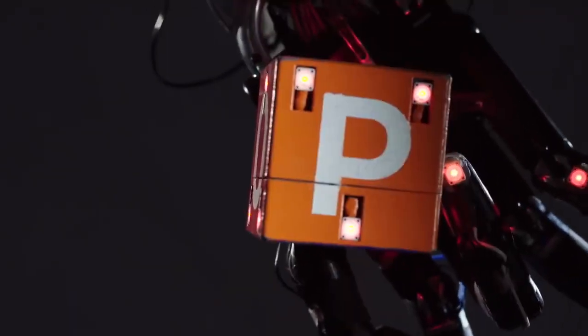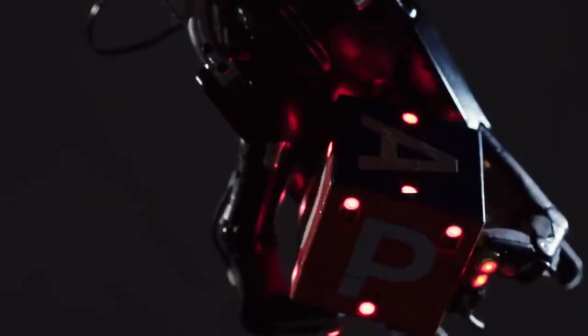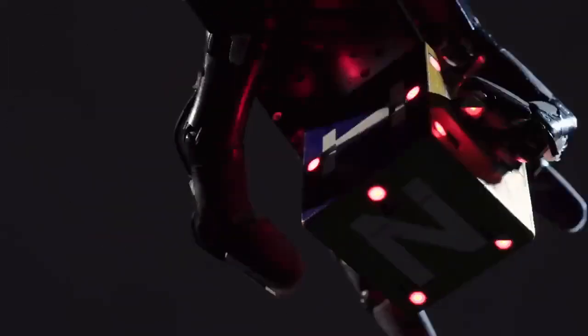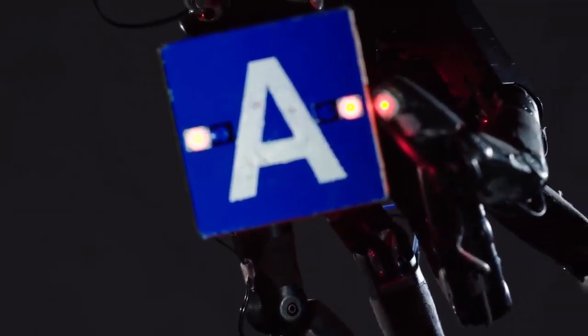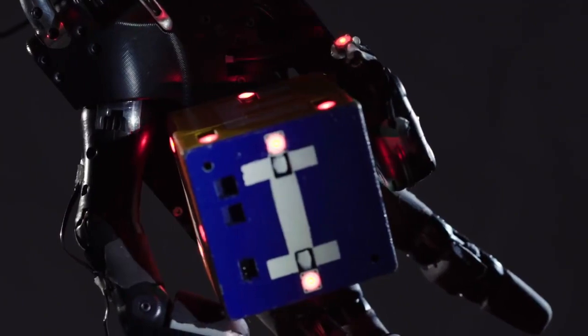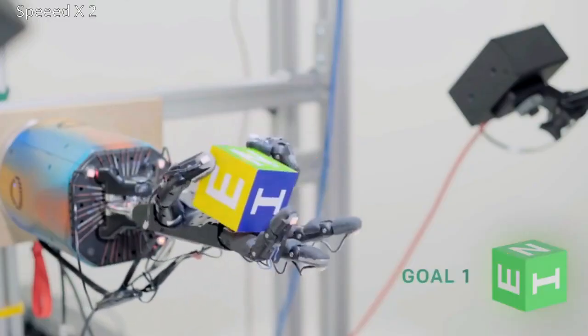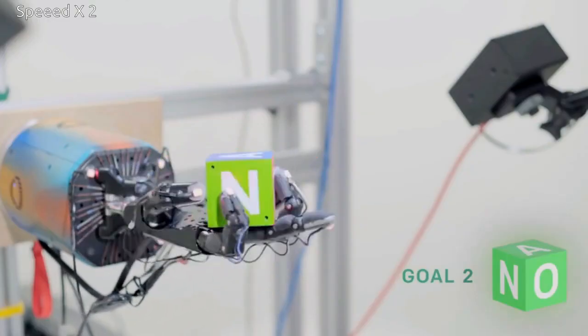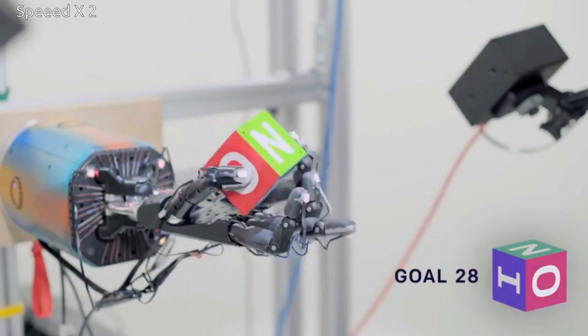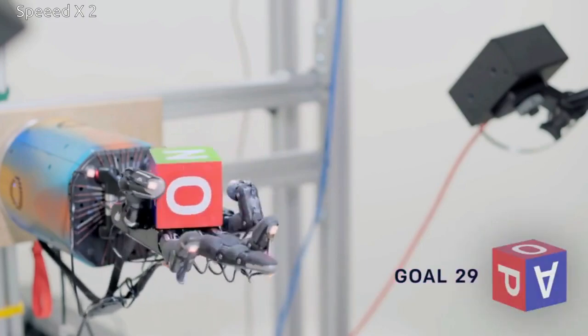Simulated robots can easily provide enough data to train complex policies, but most manipulation problems can't be modeled accurately enough for those policies to transfer to real robots. Training directly on physical robots allows the policy to learn from real-world physics, but today's algorithms would require years of experience to solve a problem like object reorientation.